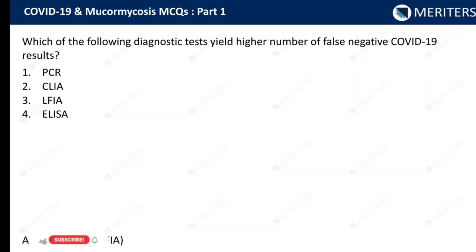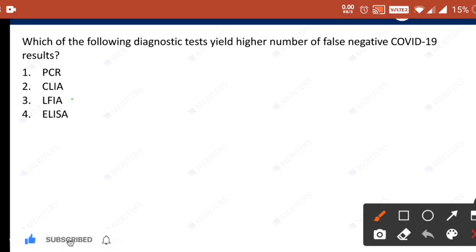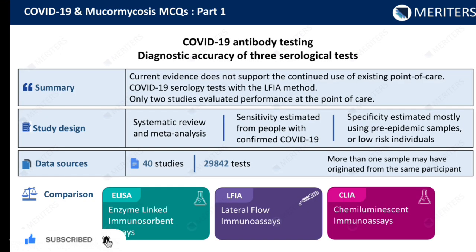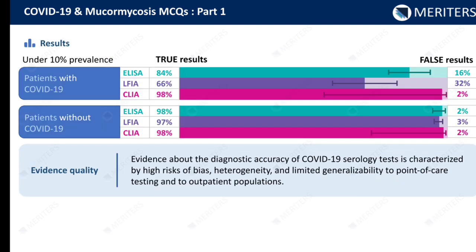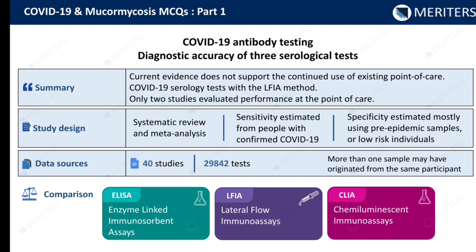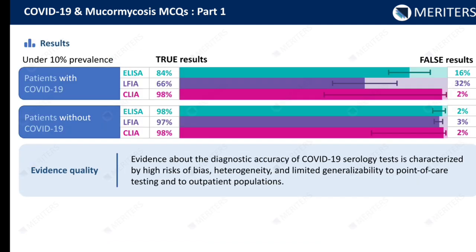Which of the following diagnostic tests yield a higher number of false-negative COVID-19 results? The answer is option C — lateral flow immunoassays lead to the maximum number of false-negative cases. This is a very important slide; please pause the video and note this down. The chart clearly shows that maximum false results are achieved through lateral flow immunoassays.